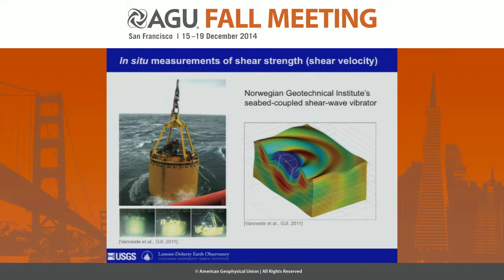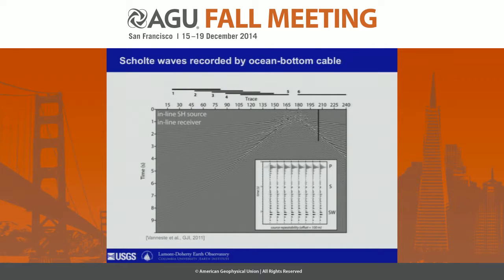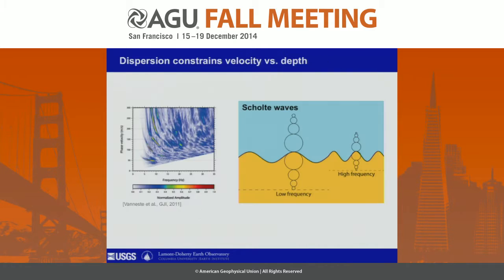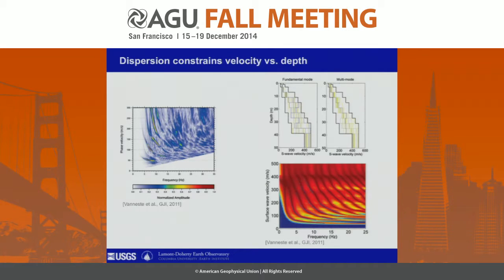This device actually sits on the seabed and has a ram that rocks back and forth at a prescribed frequency, causing the instrument to rock back and forth and generate shear waves. You can measure those shear waves on ocean bottom instruments such as an ocean bottom cable or ocean bottom seismometers, and then use the arrival time of surface waves in those data to constrain shear wave velocity as a function of depth. The basic idea is that interface waves of different periods are sensitive to velocities at different depths — low frequencies or long period waves are going to feel much deeper depths than high frequency waves. You can look at the change in velocity as a function of frequency to model velocity as a function of depth.